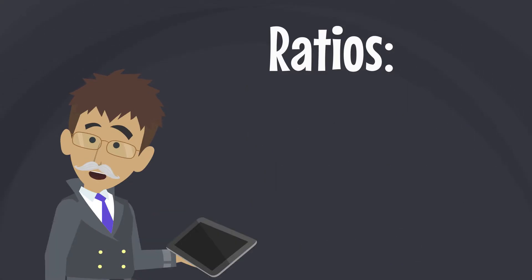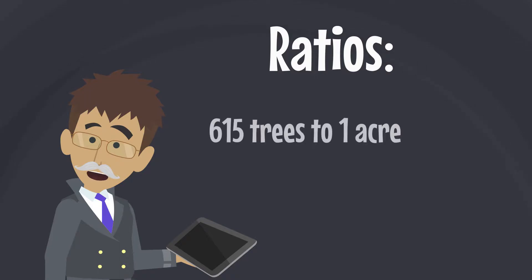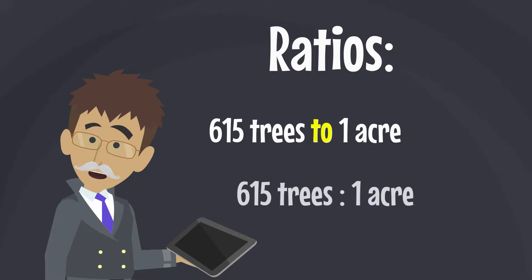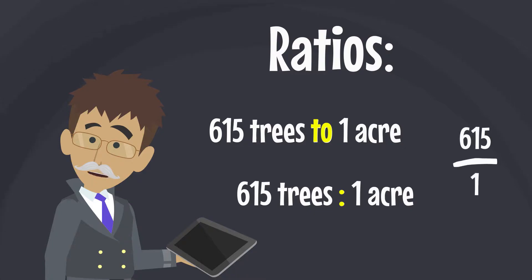Ratios can be written in three ways: using the word 'to' as in the previous examples, using a colon between the two values, or the values may be written as a fraction.